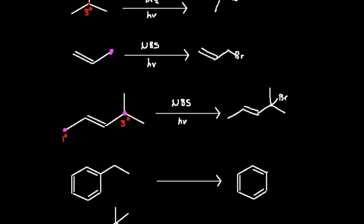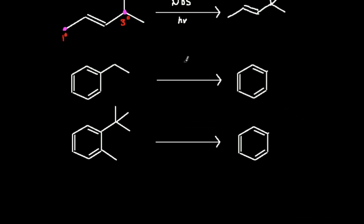Let's look at when you have aromatic rings. Here in my first example I have ethyl benzene, and I'm going to use NBS and light — N-bromosuccinimide and light. The same kind of rule applies: if I use NBS and light on a carbon chain coming off of an aromatic ring, I'm going to brominate allylic to the benzene ring — not on the benzene ring itself. The position allylic to the benzene ring is where I would actually brominate, and my product will look like that.